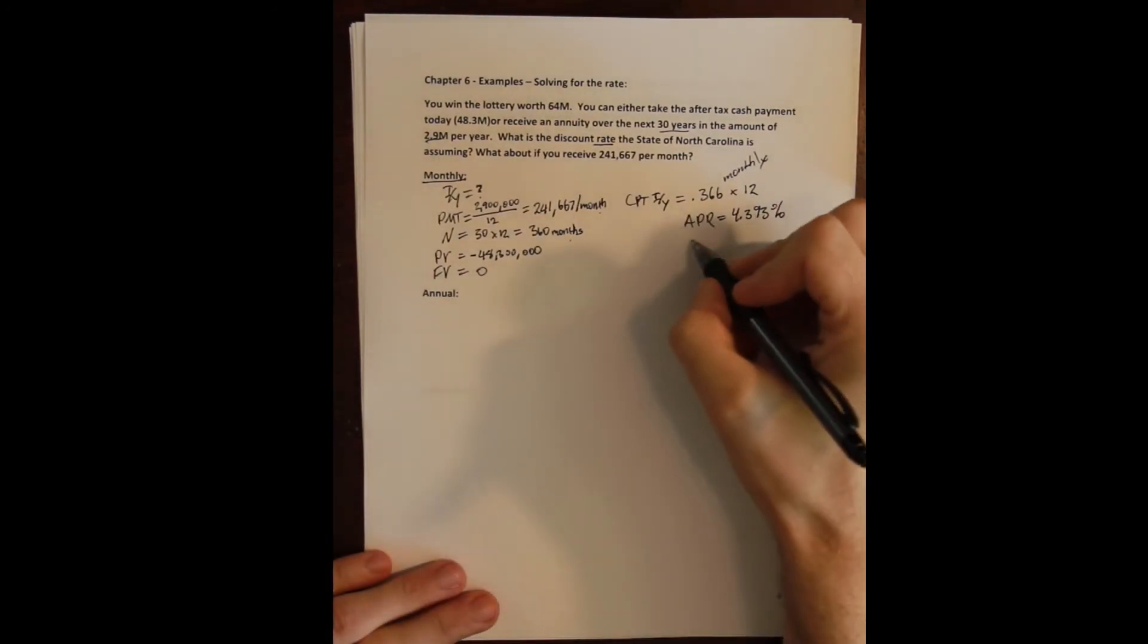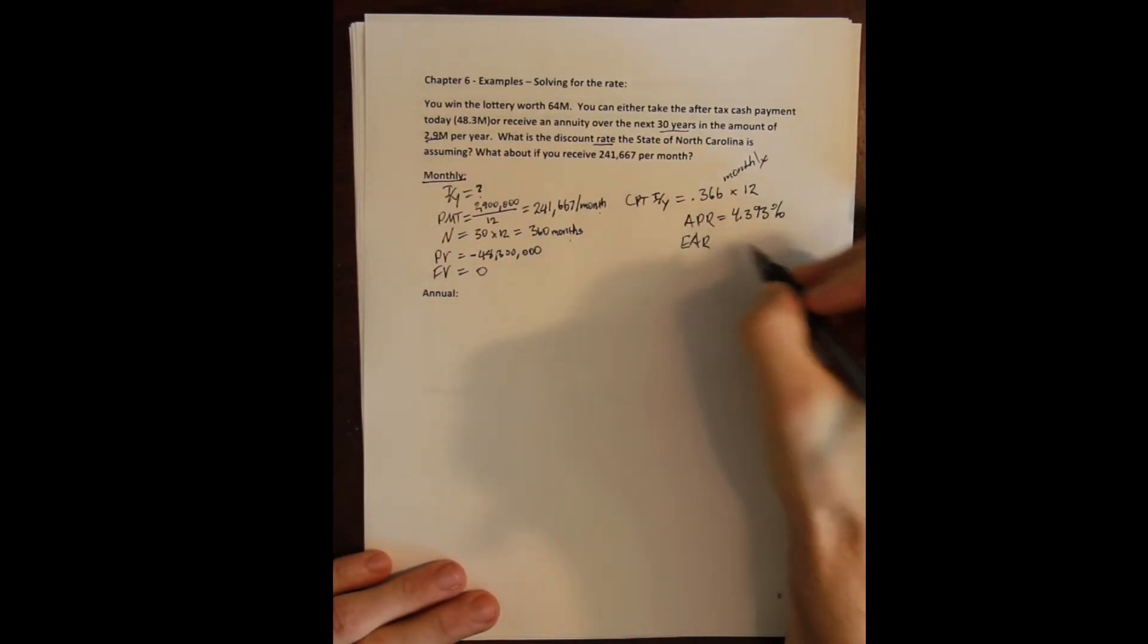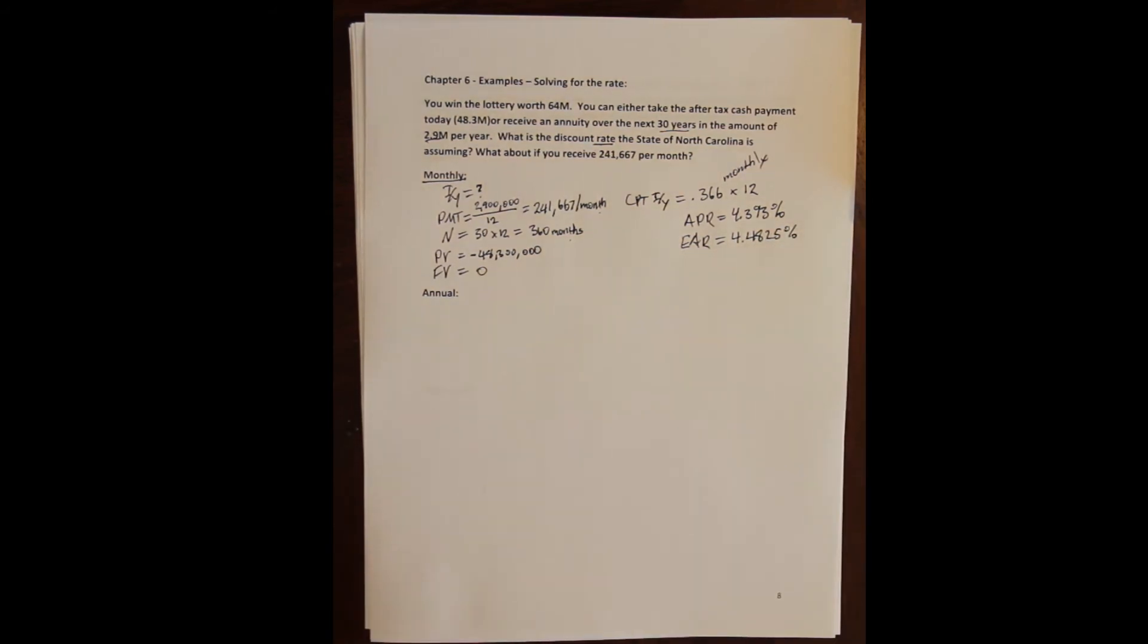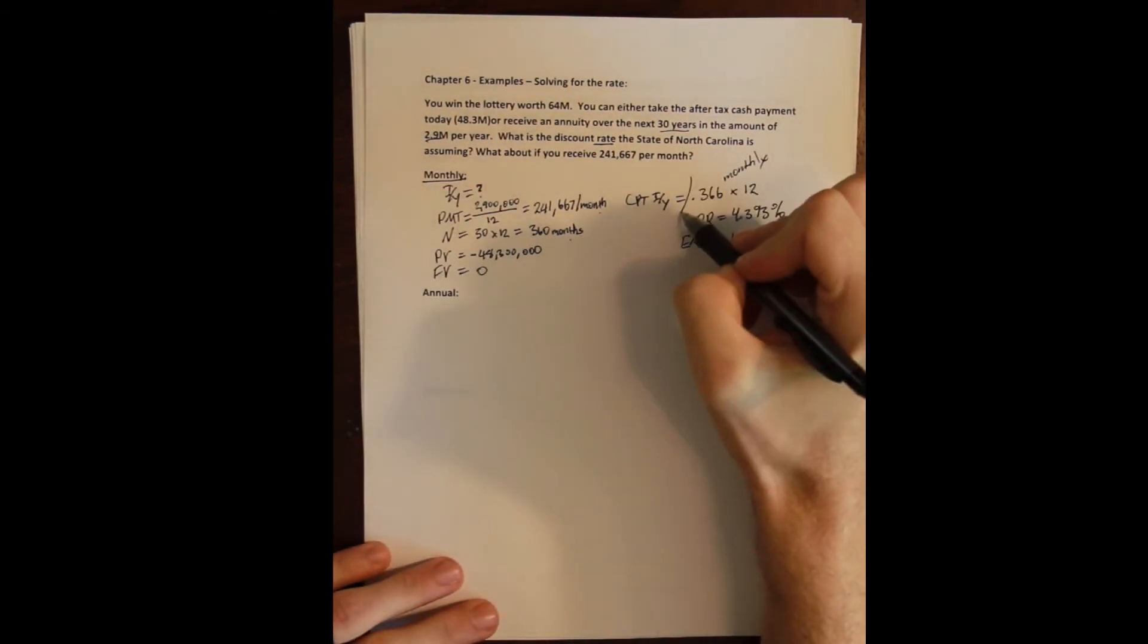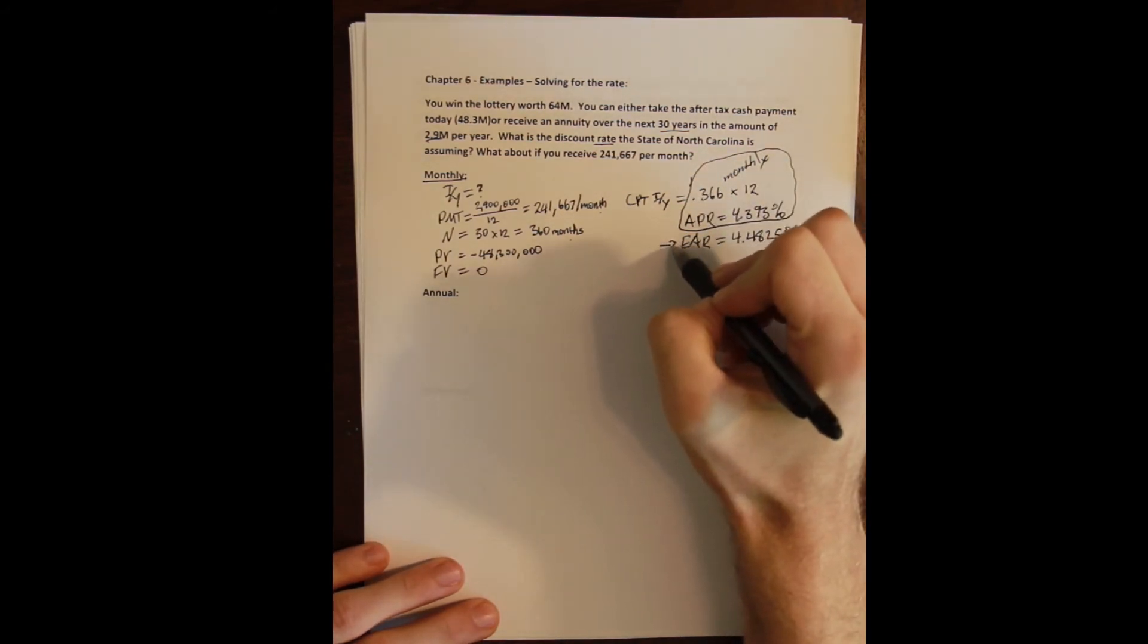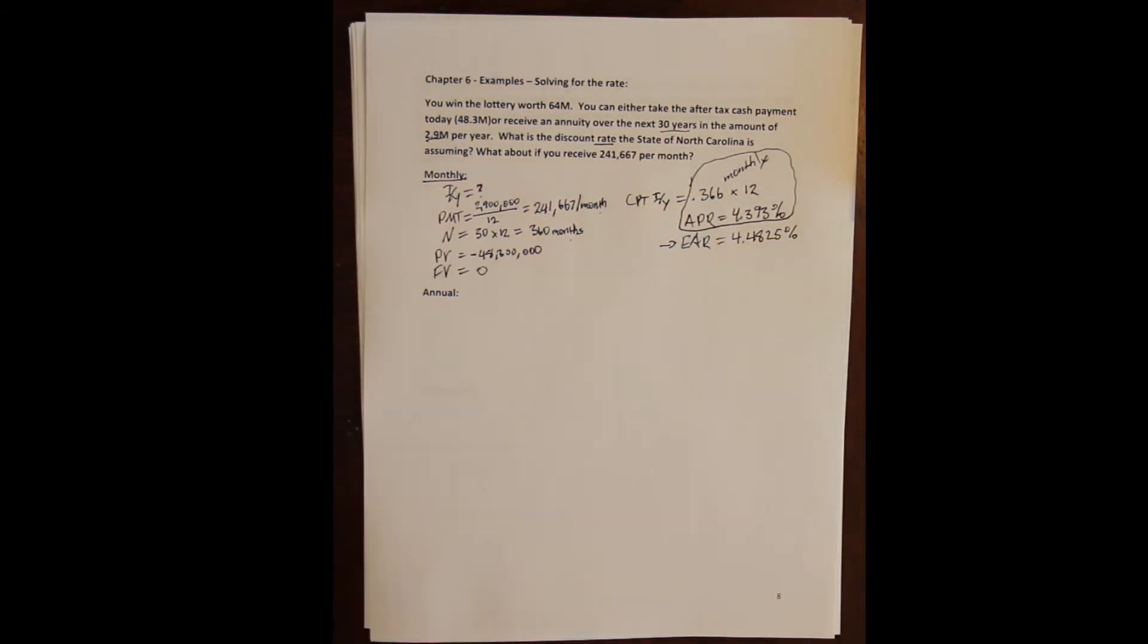And we know that we can use our calculator to solve for the effective annual rate, which will give us an annual rate that accounts for the compounding that we're missing here. We can use our calculator and the interest conversion environment to solve for the effective annual rate of 4.825%. But in practice, this is the answer that I'm going to be asking for. So unless I specifically ask for the EAR, I'm interested in the annual percentage rate, because this is the stated rate—this is the rate that the contract is going to be listed at.